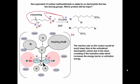The rate of reaction at this carbon would be much slower than at the unhindered electrophilic carbon due to steric crowding of the transition state which causes a larger activation energy. A would be the major product formed.